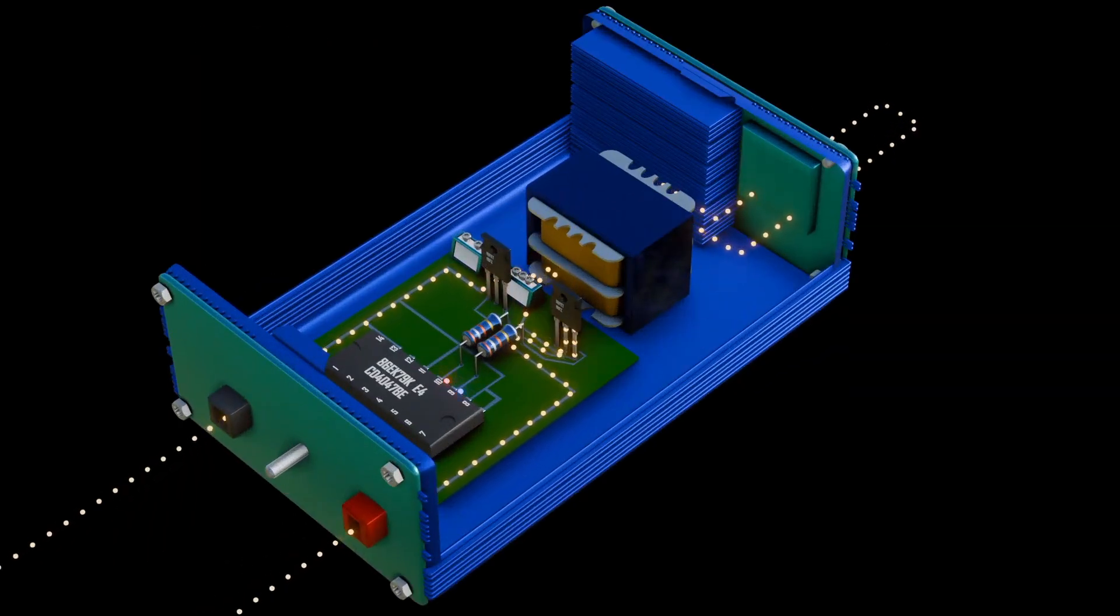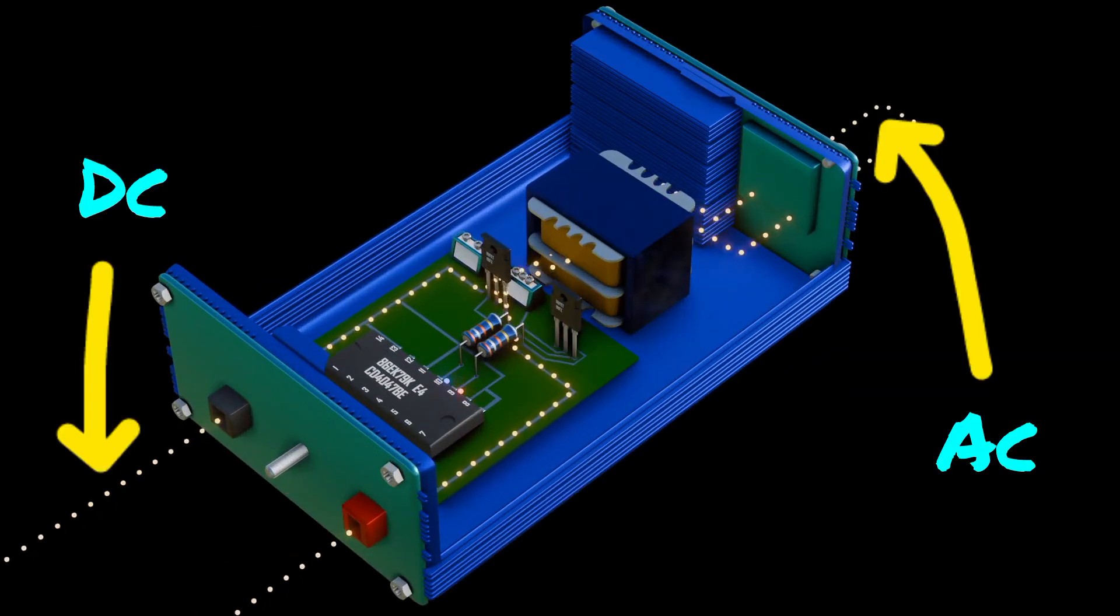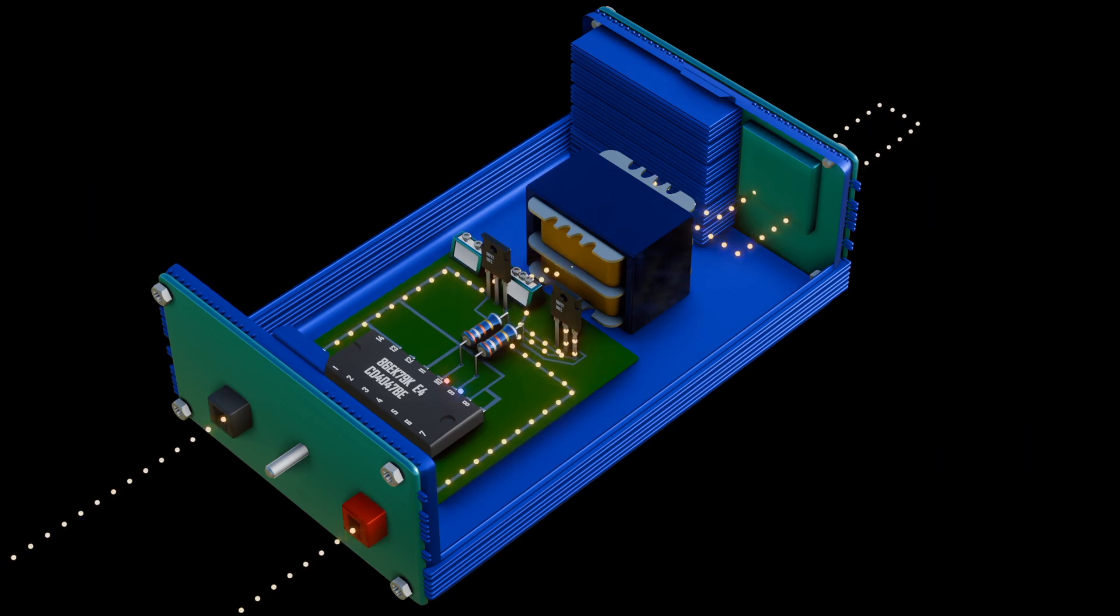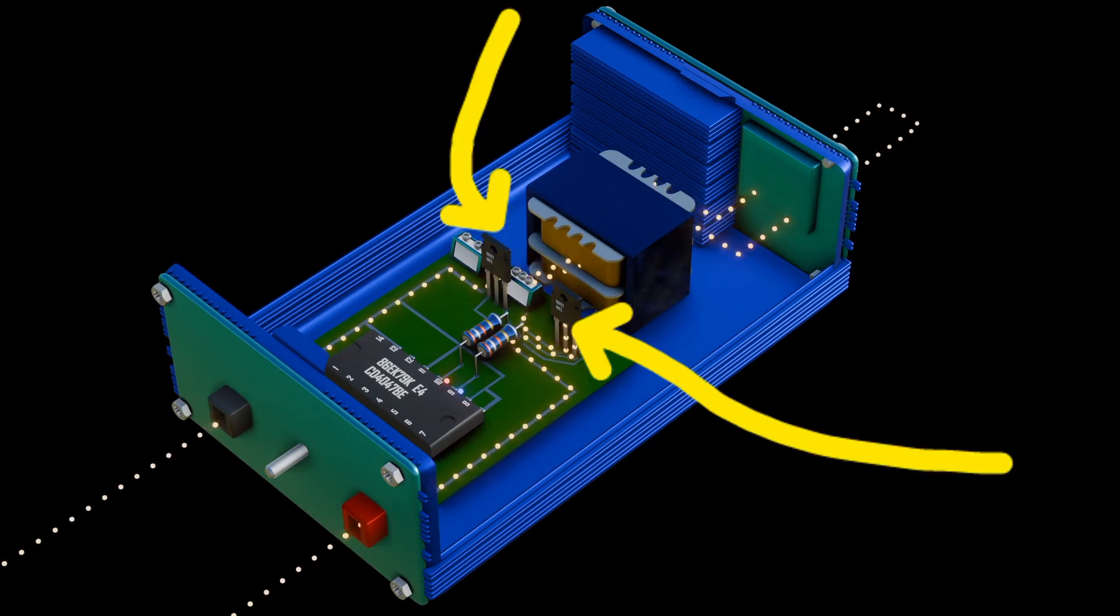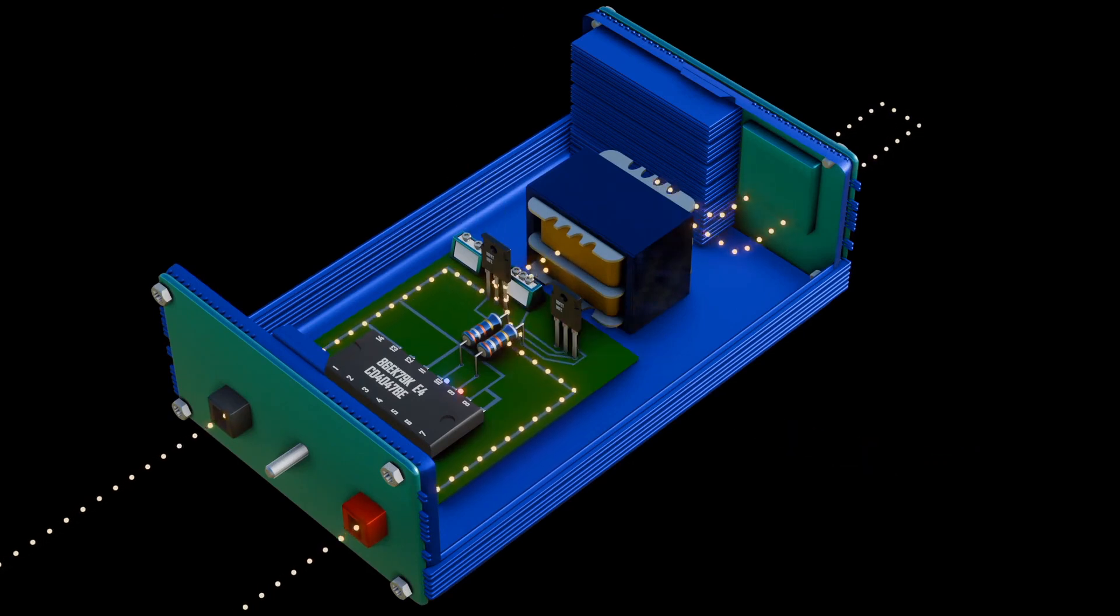An inverter converts DC current to AC current by switching the direction of a DC current several times per second. For example, in this circuit we use the IGBT to switch the DC current on and off. When one transistor is off, the other one is on.